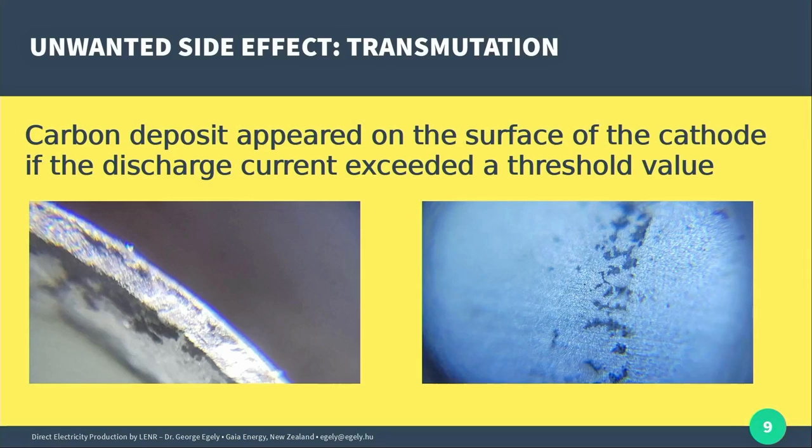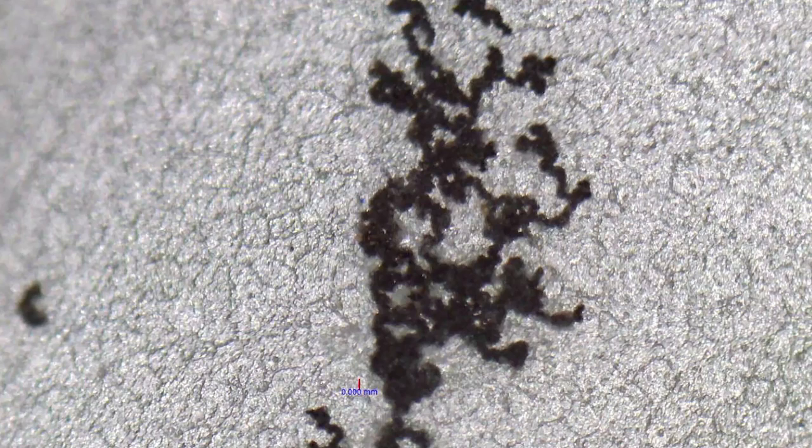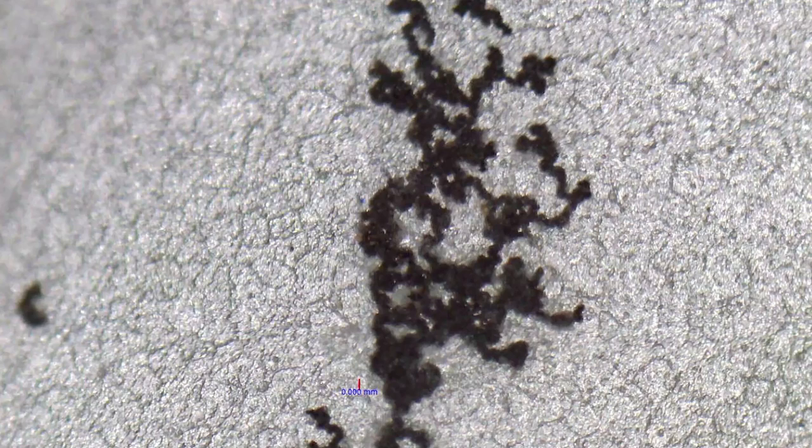There was an unwanted side effect. We observed a transmutation. Carbon deposits appeared on the surface of the cathode when the input current exceeded a threshold value. The hydrogen was generated in phosphoric acid, and the electrodes were stainless steel.